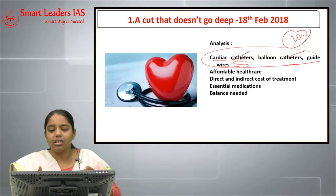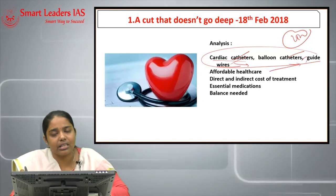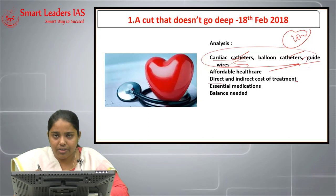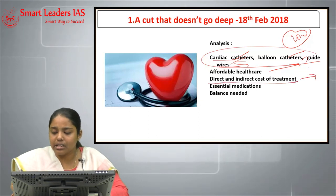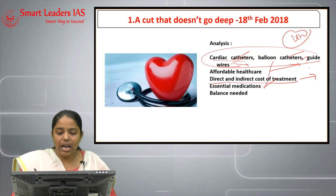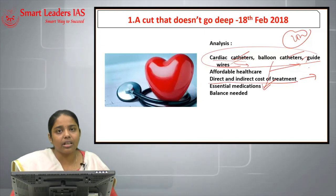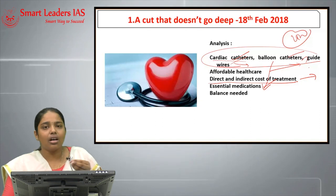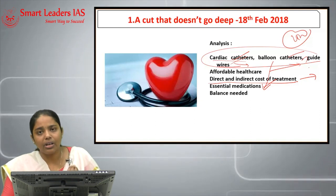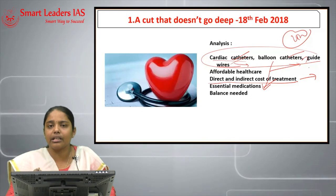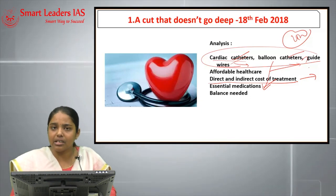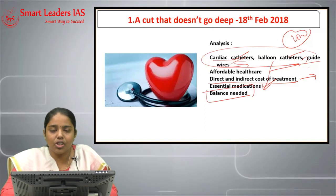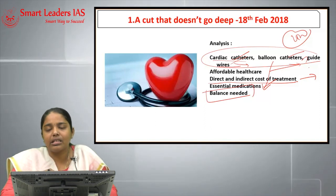Because of these issues, affordable healthcare is still a question mark. Direct and indirect costs of treatment are still increasing. Essential medications and all items used for cardiac procedures need to come under essential medication classification. Unless that happens, we will not see the desired results from the current price regulation.